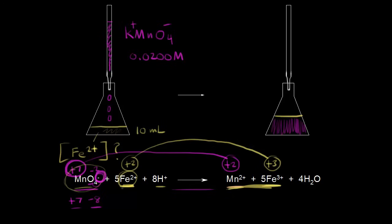That means we've completely reacted all of the iron 2+ originally present, so we stop the titration — we've reached the end point. We've used a certain volume of our potassium permanganate solution. Let's say it took 20 milliliters of our potassium permanganate solution to completely titrate our iron 2+.